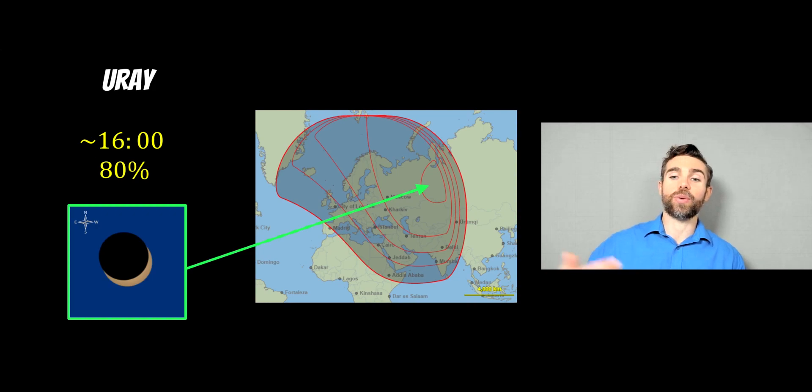So you will get a noticeable dip in how bright it appears or how dim it actually gets as that moon passes in front of the sun. In those locations, it's going to happen at a later time. About four o'clock in the afternoon locally, you're going to get about 80 percent of the sun obstructed there.